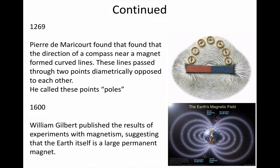In 1269, Pierre de Maricor published the results of his investigations into magnetism. He had mapped the shape of the field lines around a magnet by sketching the direction that a compass pointed at different places. He found that the field lines always passed through two points on the magnet, and he called these the poles of the magnet.